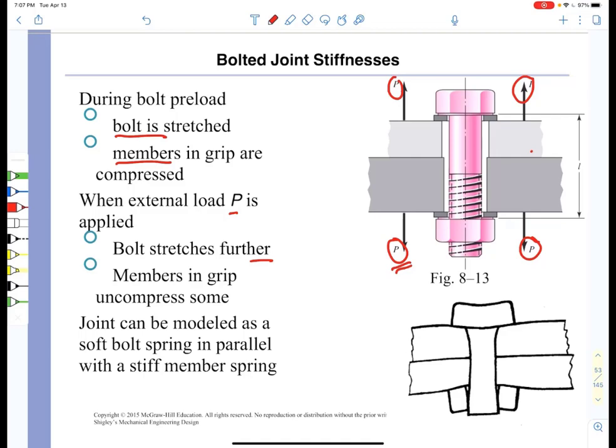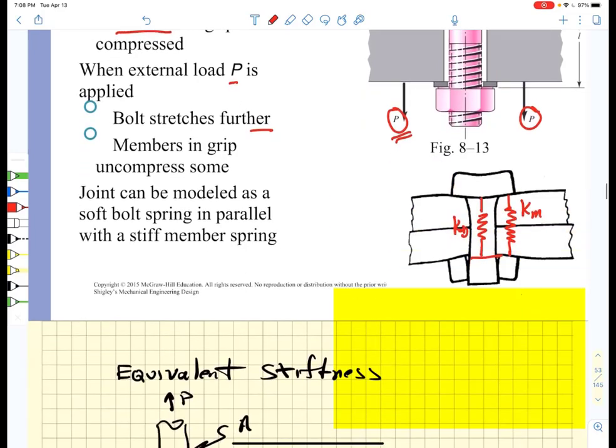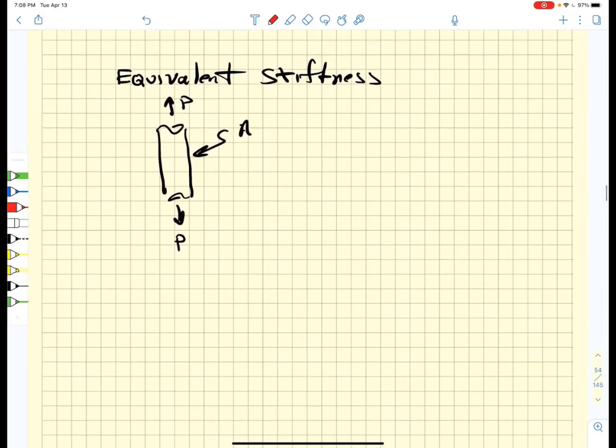We want to model this system as a system of springs, so we're going to model the bolt as an equivalent spring that is stretching and we want to model the member as an equivalent spring that is compressing. We need to find a bolt spring constant and we need to find a member spring constant. But before we do that we have to talk a little bit about equivalent stiffness.